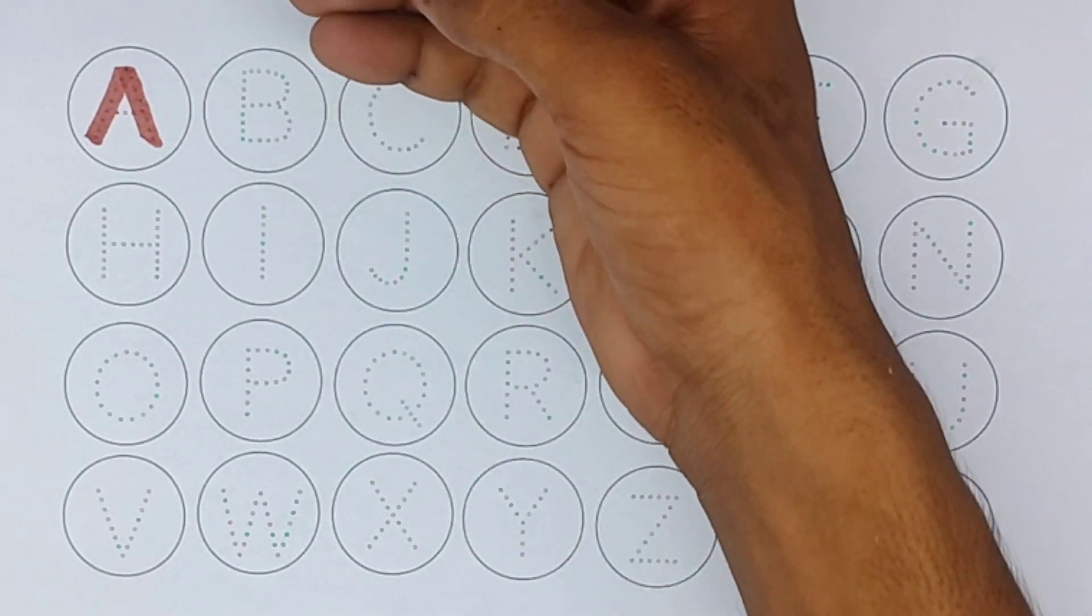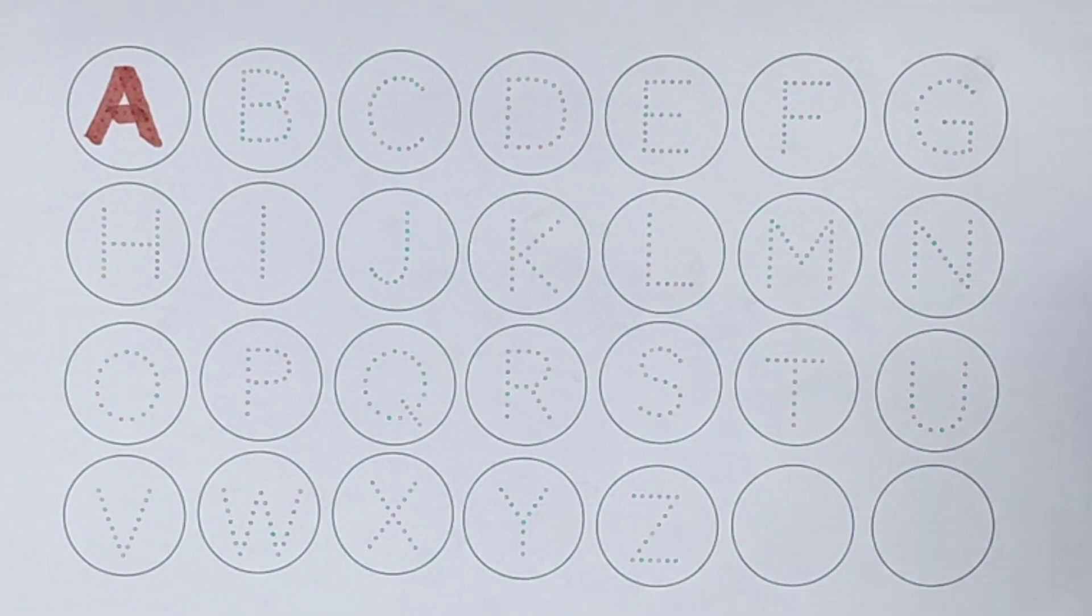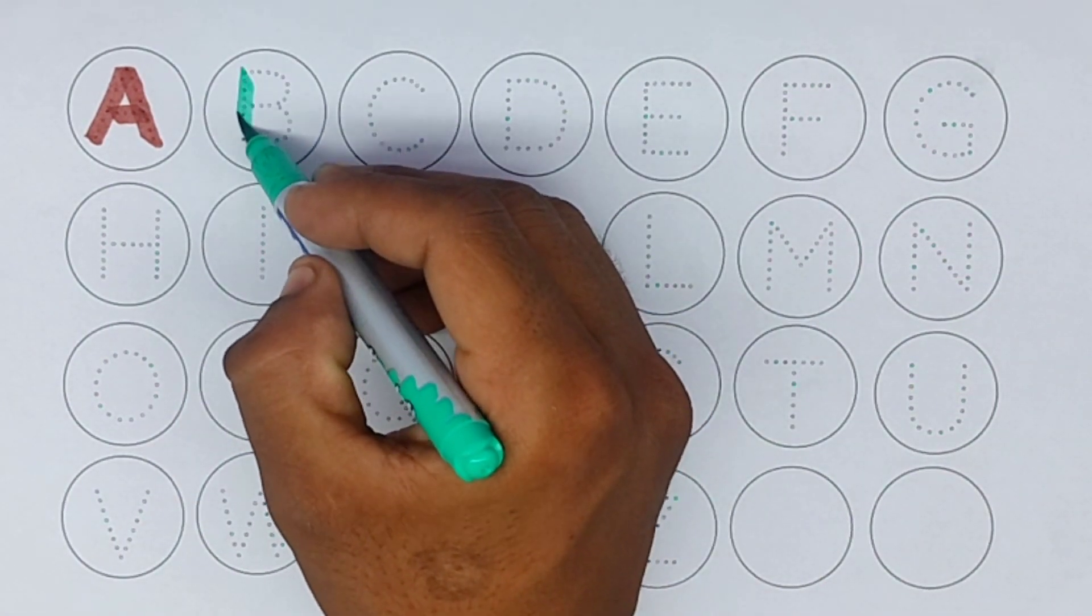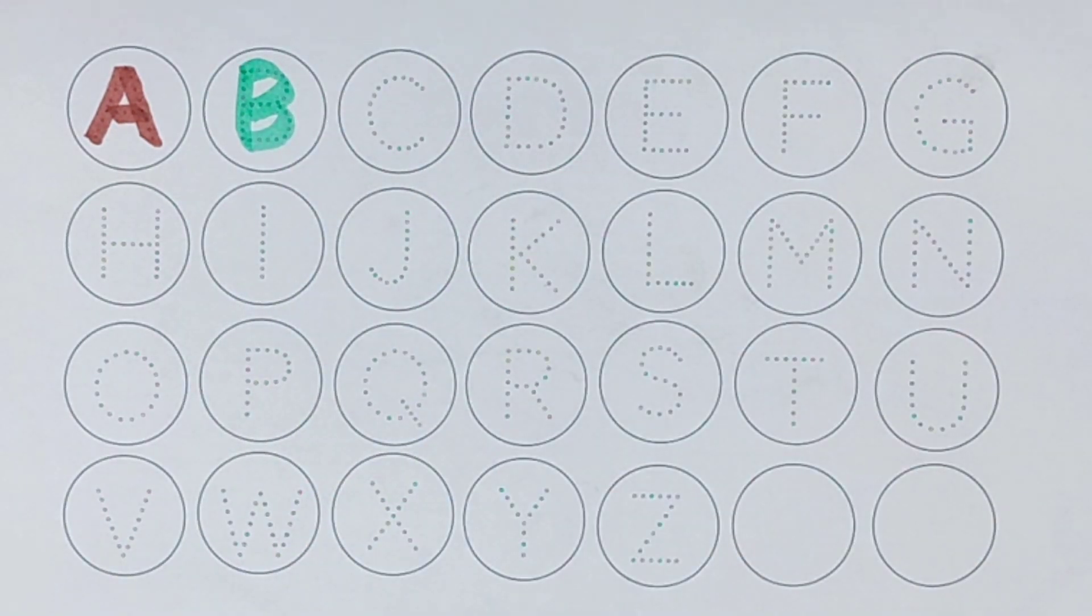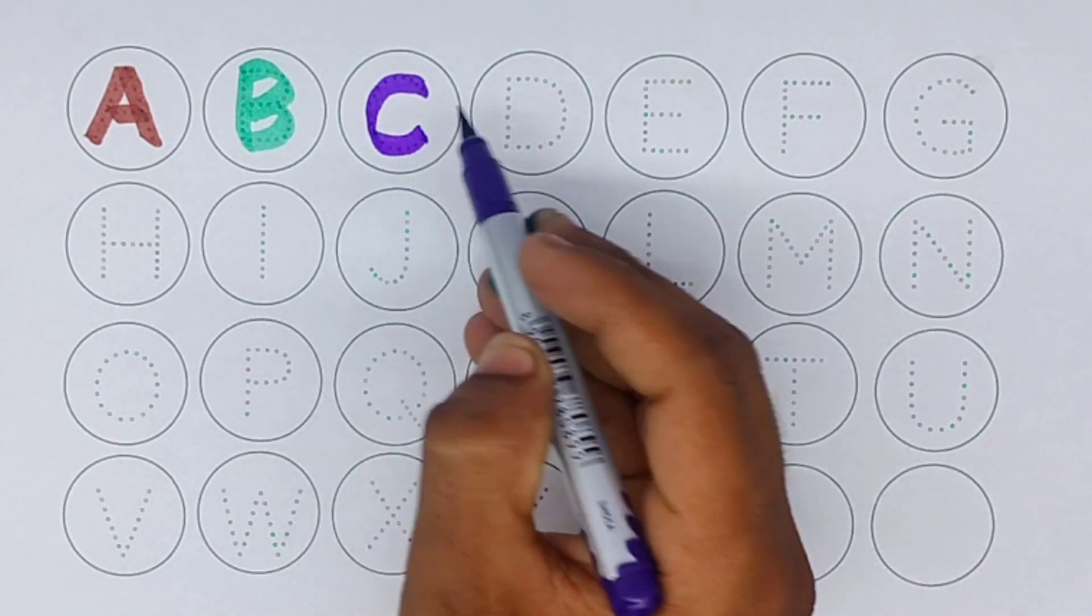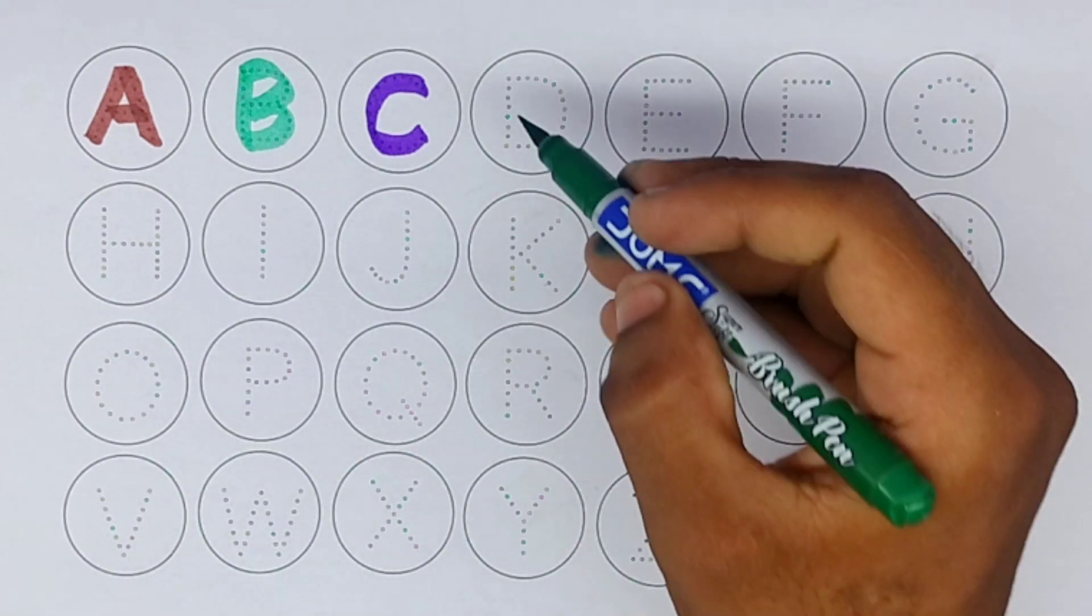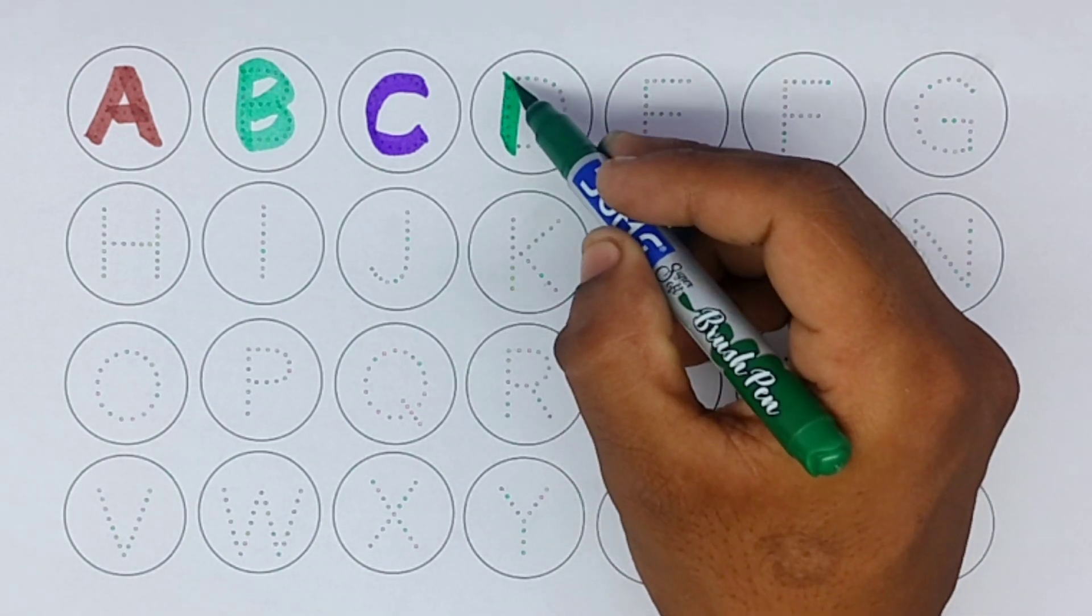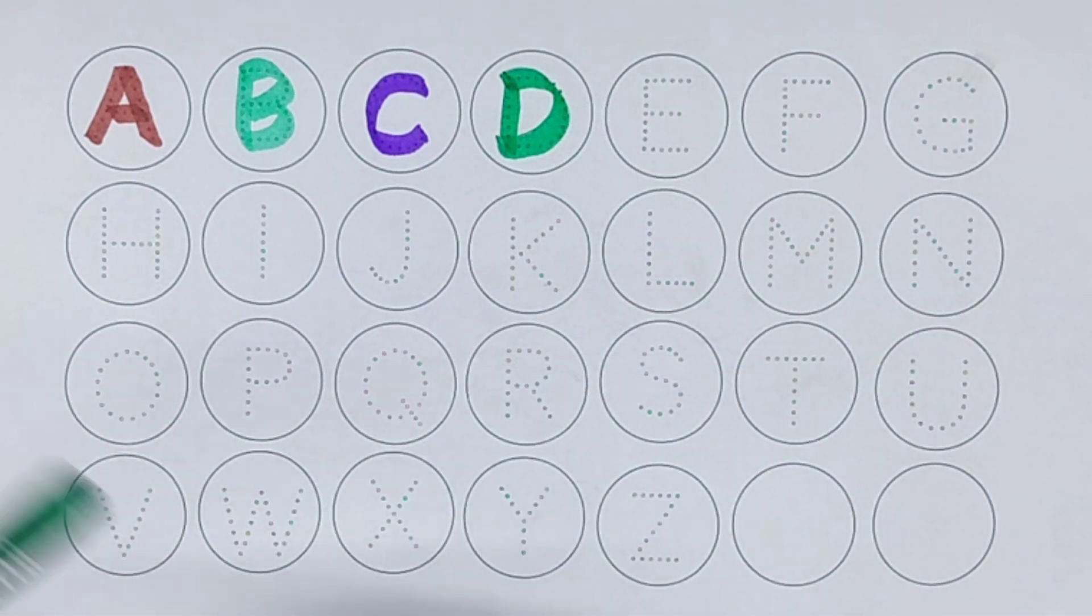A, A for aeroplane. B, B for butterfly. C, C for canteen. D, D for doll.